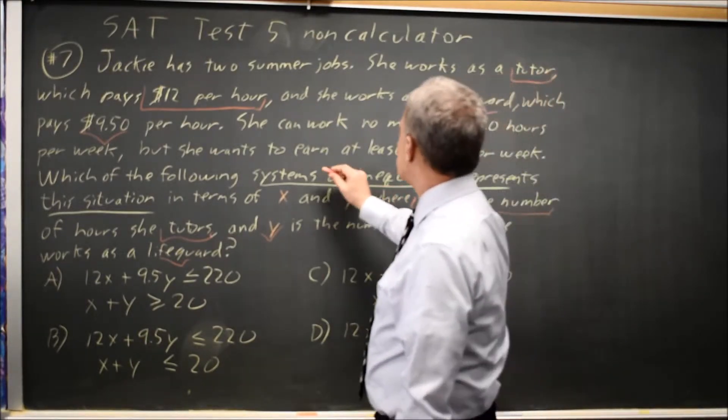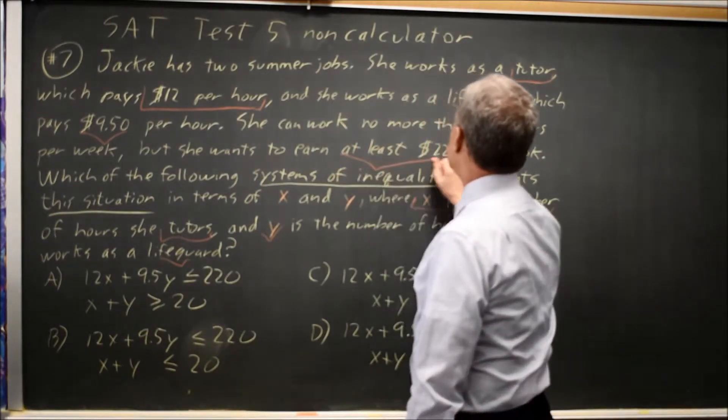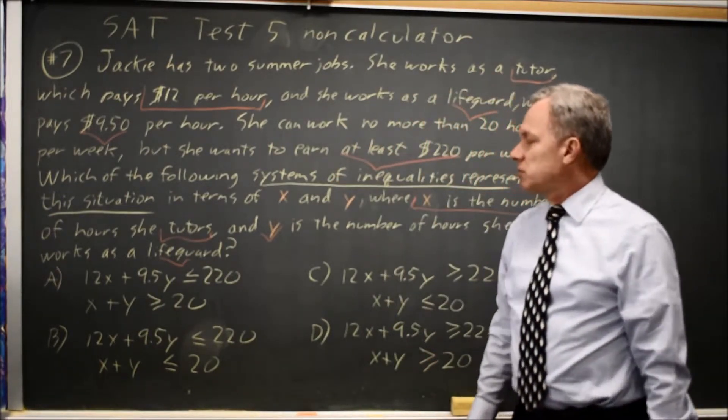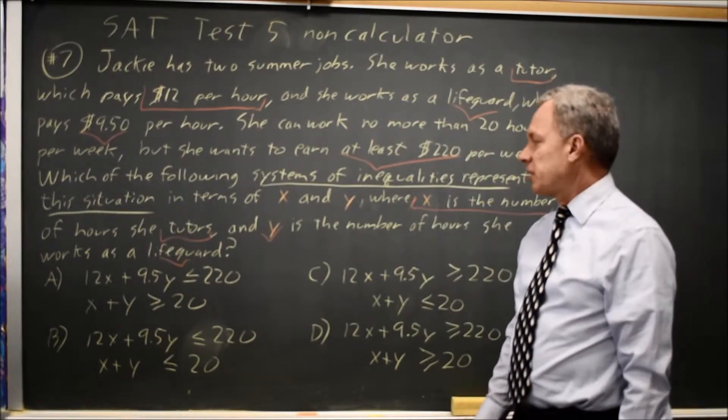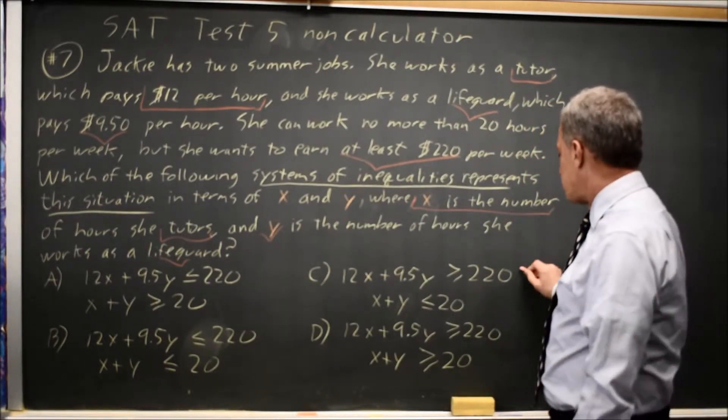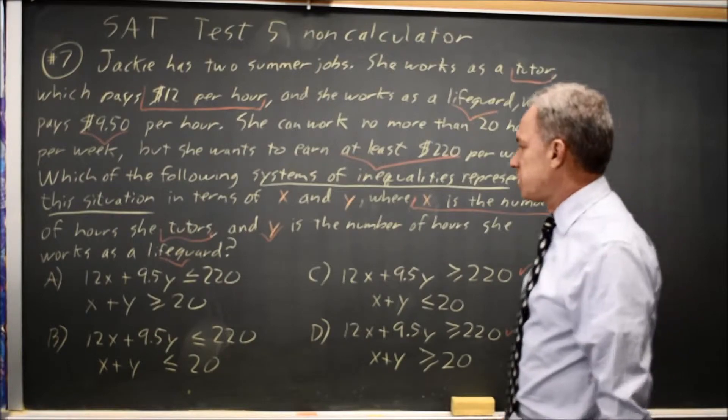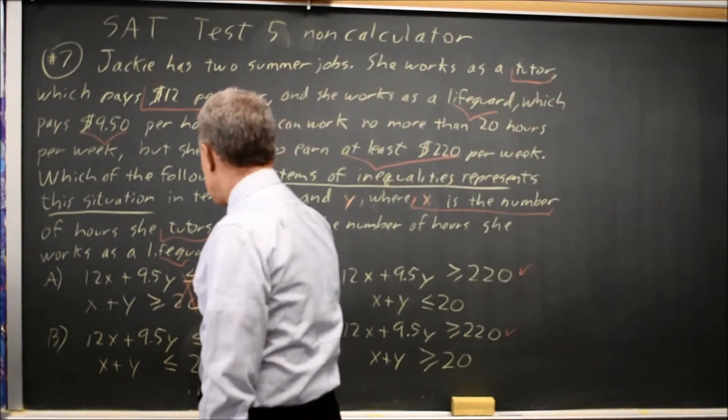We're told she wants to earn at least 220, so the amount she earns, 12x plus 9.5y, has to be greater than or equal to 220, which is choices C or D. We can reject choices A and B.